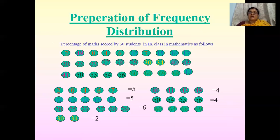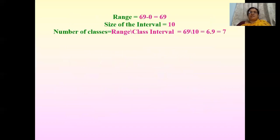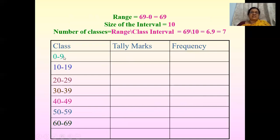Now 60 to 69. We prepare the frequency distribution table. The range is maximum minus minimum, that is 69 minus 0, equal to 69. The size of the class interval is taken as 10. The number of classes is 69 divided by 10, which is 6.9 — rounded up to 7 classes. Each class has a length of 10.